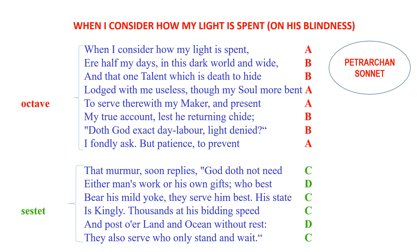Here is an example of a Petrarchan sonnet: Milton's 'On His Blindness.' The poem 'When I Consider How My Light Is Spent' is one of the best known sonnets of John Milton. Its 14 lines are divided into an octave of 8 lines and a sestet of 6 lines.